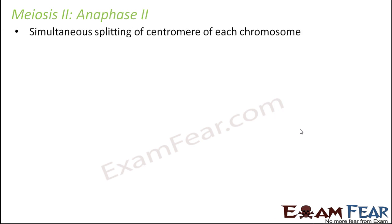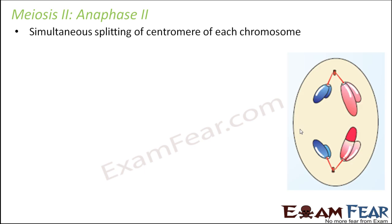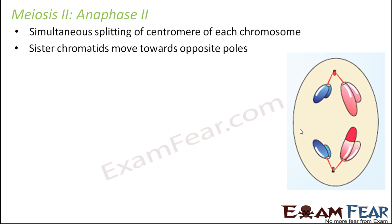In anaphase 2, there is simultaneous splitting of the centromere of each chromosome. The centromere splits and the sister chromatids start moving towards opposite poles. This movement happens due to the kinetochore microtubules. Additionally, because of the non-kinetochore microtubules, there is elongation of the cell.